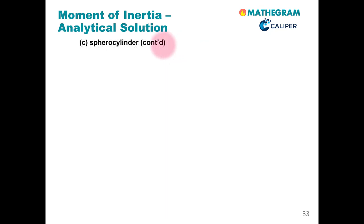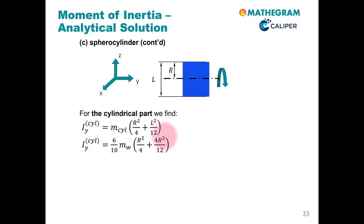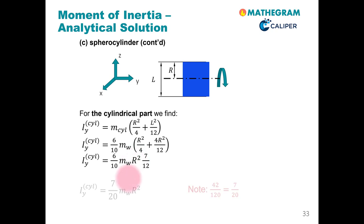We now solve the first part: the moment of inertia of the cylindrical part. You have seen this expression already. We have to consider the mass of the cylinder and, of course, the shorter length of the cylinder, which is only 2r. Putting in the numbers and replacing the mass of the cylinder by the respective fraction of the total mass, we arrive at an important expression. Note that in going from one equation to the next, we use this relationship here.